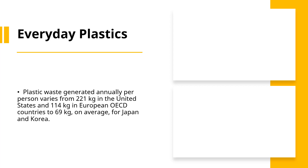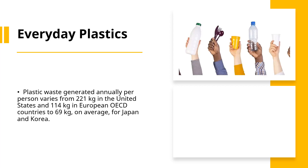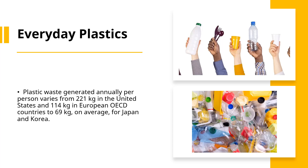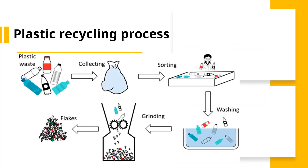Every day we purchase several plastic products like water bottles, milk containers, frozen food boxes, cutlery, bags and others. Most of them are used once and then thrown away. These plastic products can be melted and granulated again to be reused. But the problem is how to identify what plastic the product is made of and how to sort them, because most plastics look the same.